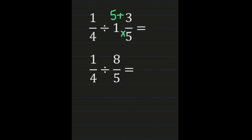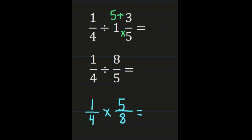Now we have it set up as dividing fractions. 1 fourth is our first fraction — it needs to stay exactly the same. The division sign becomes a multiplication sign, and we're multiplying by the reciprocal of 8 fifths. The reciprocal of 8 fifths is 5 eighths. Showing all of your work here is really important so you can see what you're keeping and which number you need to multiply by the reciprocal. So we have 1 fourth times 5 eighths: numerator times numerator — 1 times 5 is 5 — and denominator times denominator — 4 times 8 is 32.